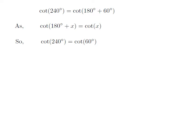Let us apply the above identity for cotangent of 240 degrees. Here, x is 60 degrees. So cotangent of 240 degrees is equal to cotangent of 60 degrees. We know the value of cotangent of 60 degrees is equal to 1 upon square root of 3. So we get the value of cotangent of 240 degrees is equal to 1 upon square root of 3.